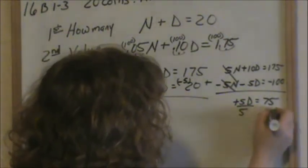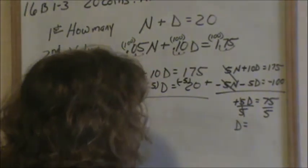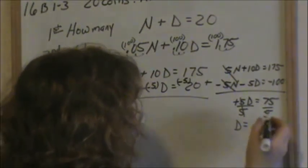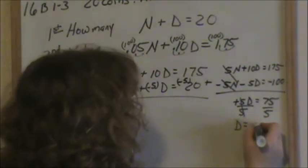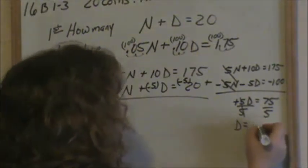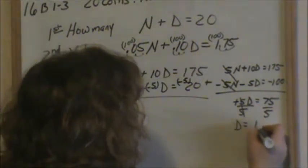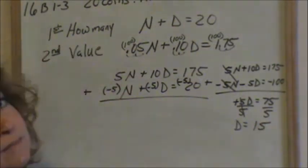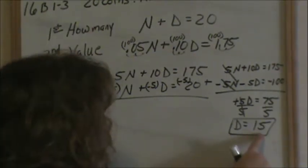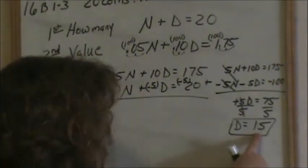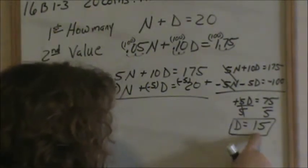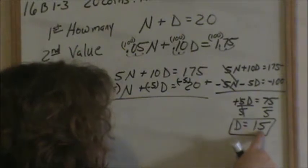Divide both sides by 5 — that cancels. D equals 15. One thing I want to point out when you're solving these: if I say the number of dimes is 15, you should not get a negative number. We will not have a negative number of dimes — these coin problems should come out with positive numbers.